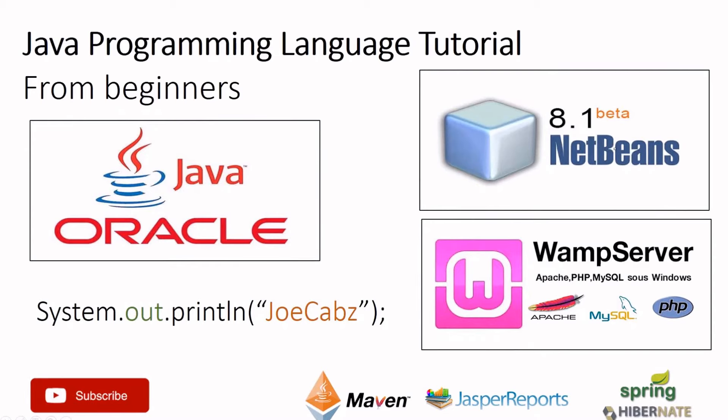There are also pictures here that are not related to this beginner tutorial — things like WampServer, Jasper, Maven, Spring, and Hybris. These are advanced topics in Java programming and software development.